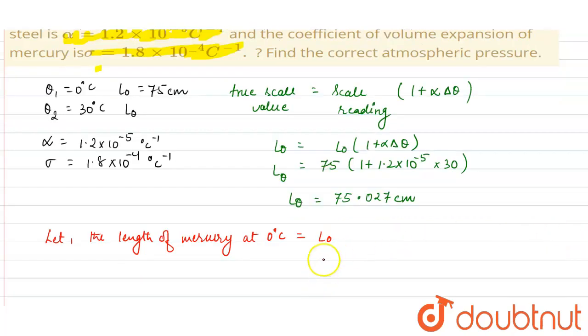Let us suppose this one. So L0 will represent the correct atmospheric pressure because the barometer is graduated for a correct scale reading at 0 degree Celsius.